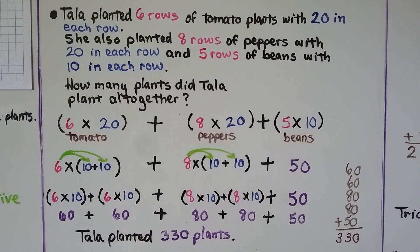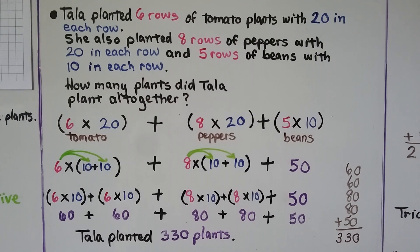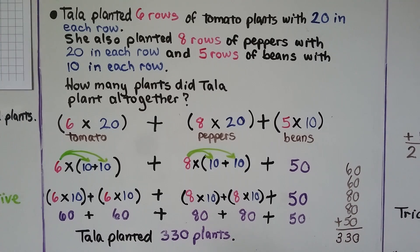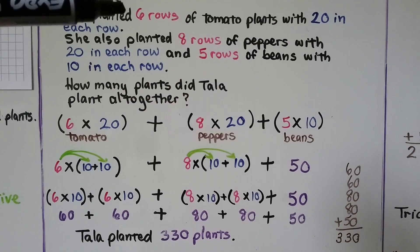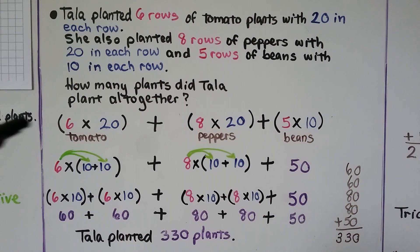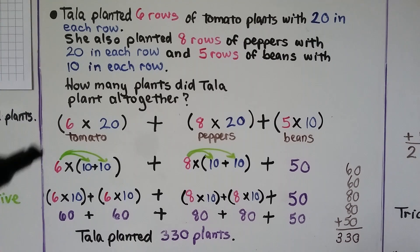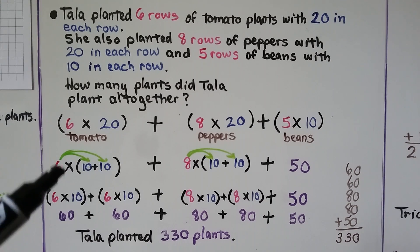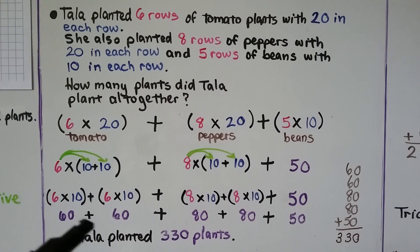Now this problem has a lot of steps, though the steps aren't difficult — there are just many of them. Tala planted 6 rows of tomato plants with 20 in each row, 8 rows of peppers with 20 in each row, and 5 rows of beans with 10 in each row. How many plants did Tala plant altogether? We break the problem into pieces. First: 6 rows of tomatoes with 20 each is 6 times 20. Breaking it into 6 times 10 plus 10 gives 6 times 10 plus 6 times 10 — that's 60 plus 60.